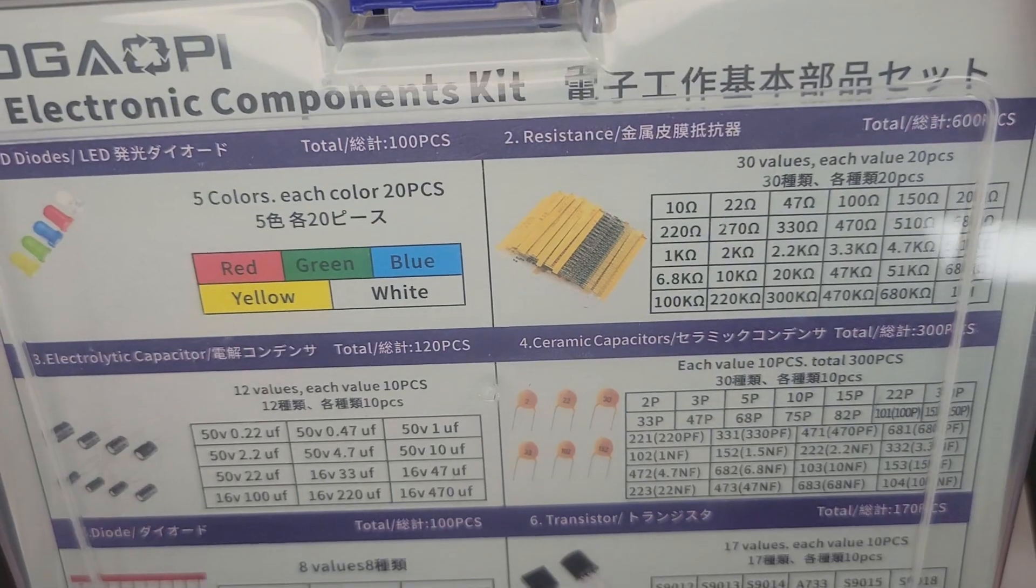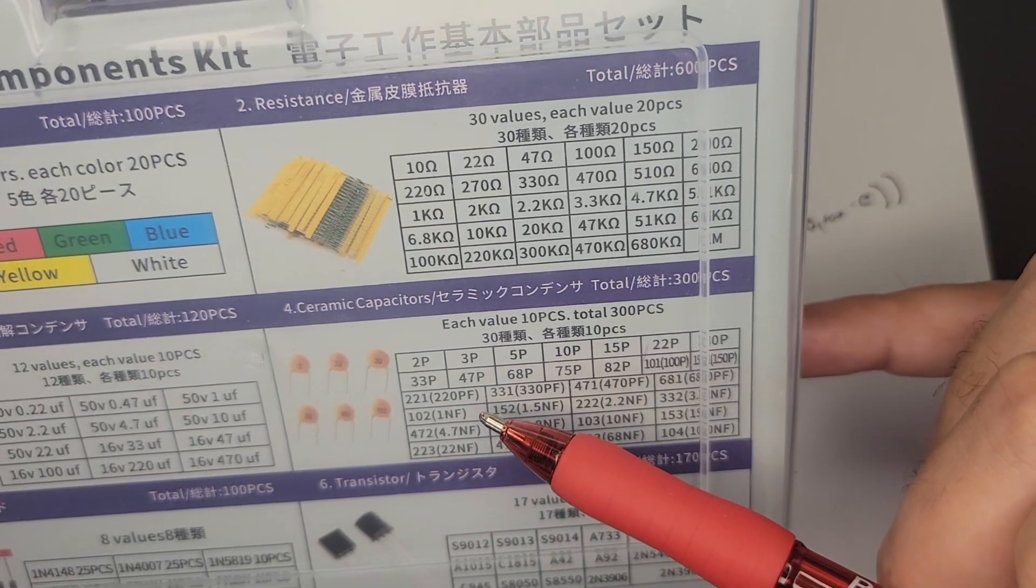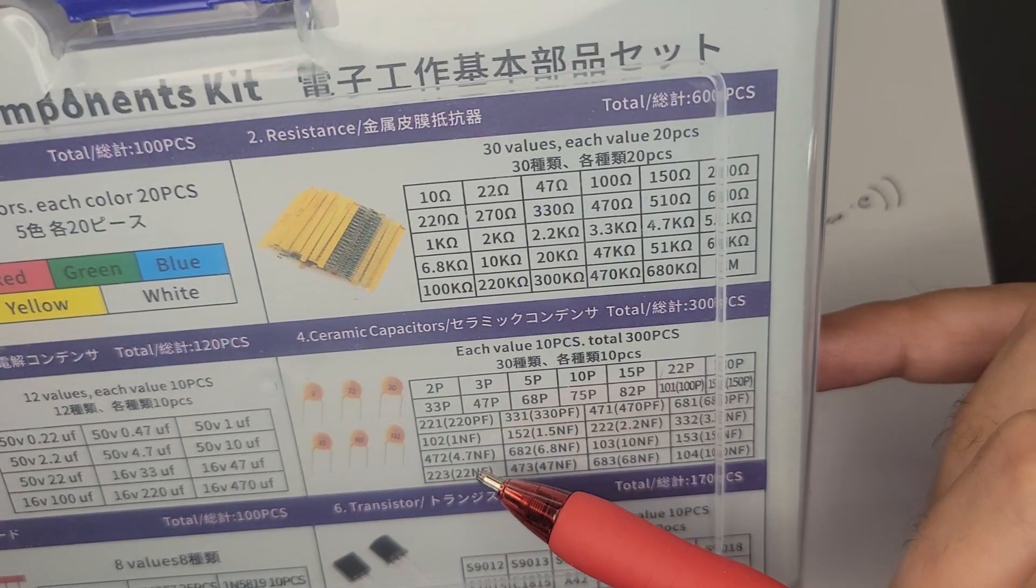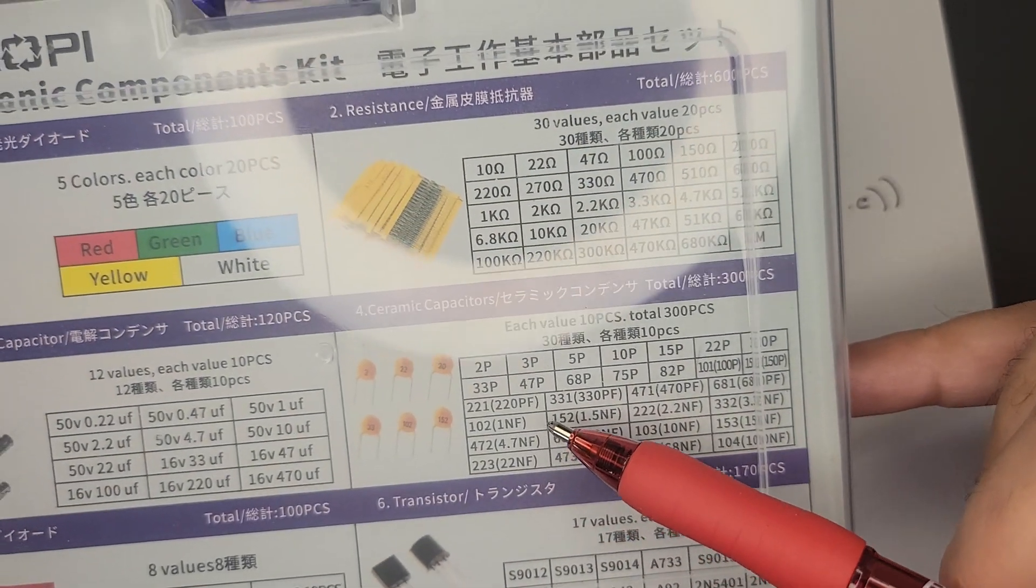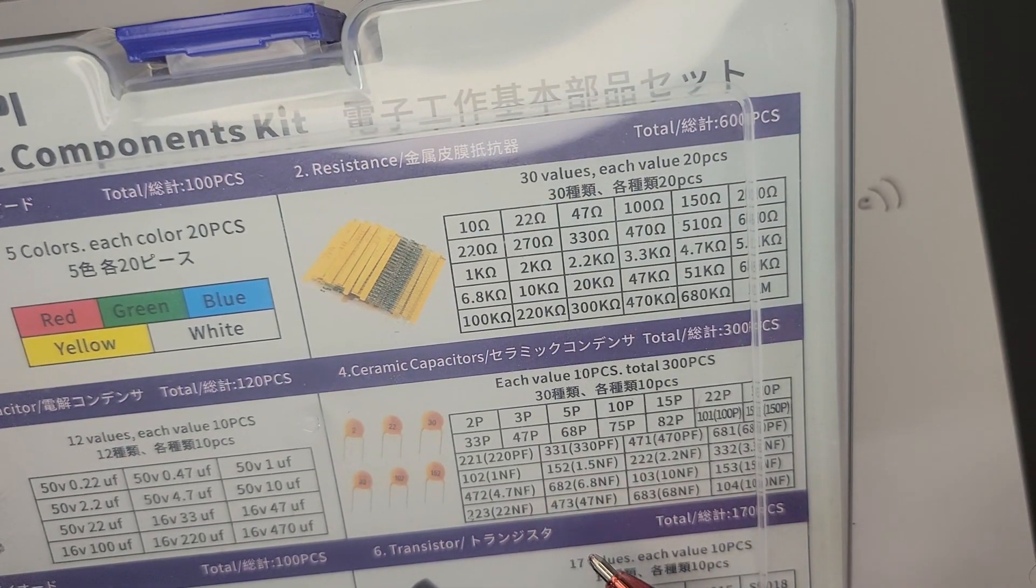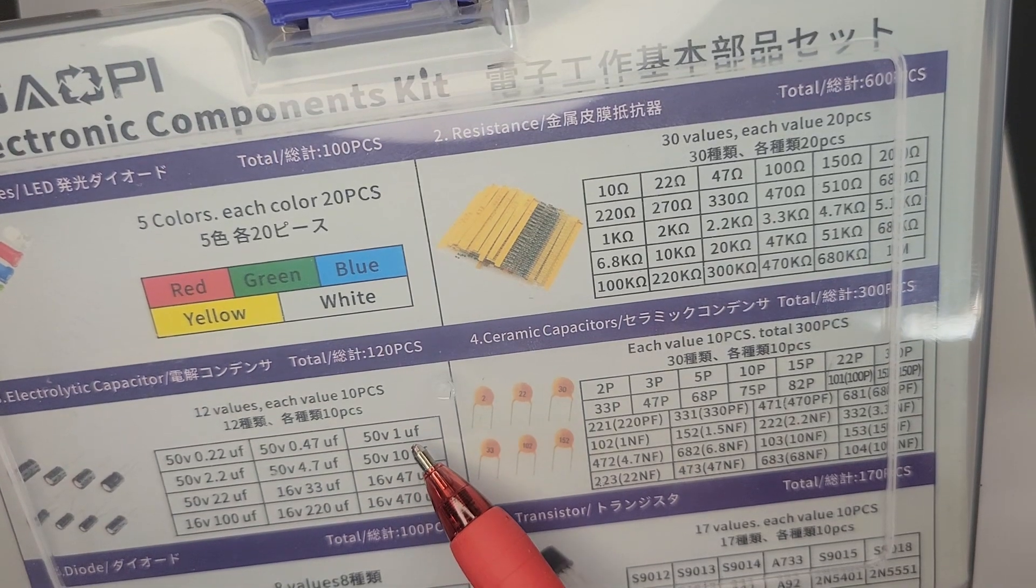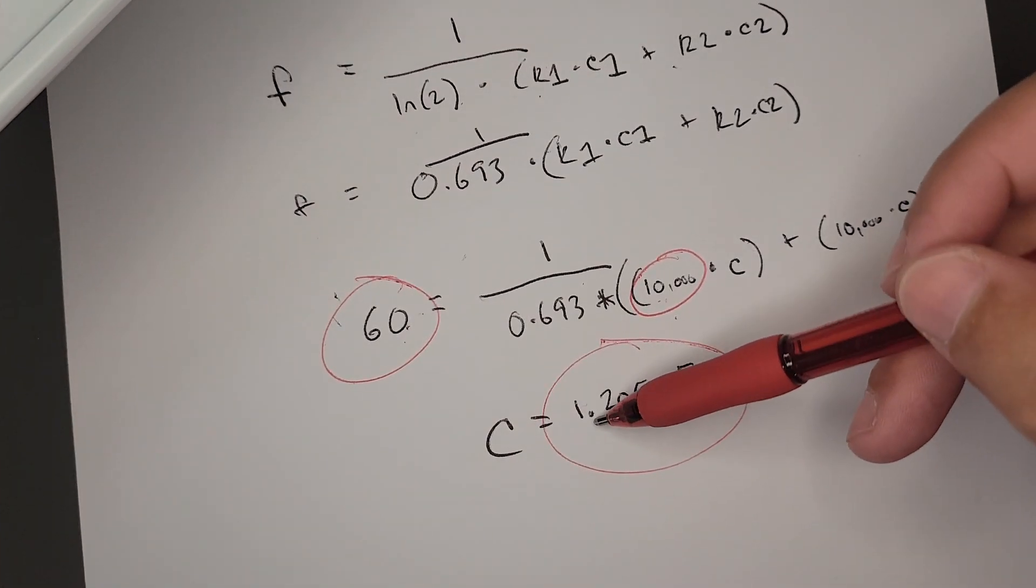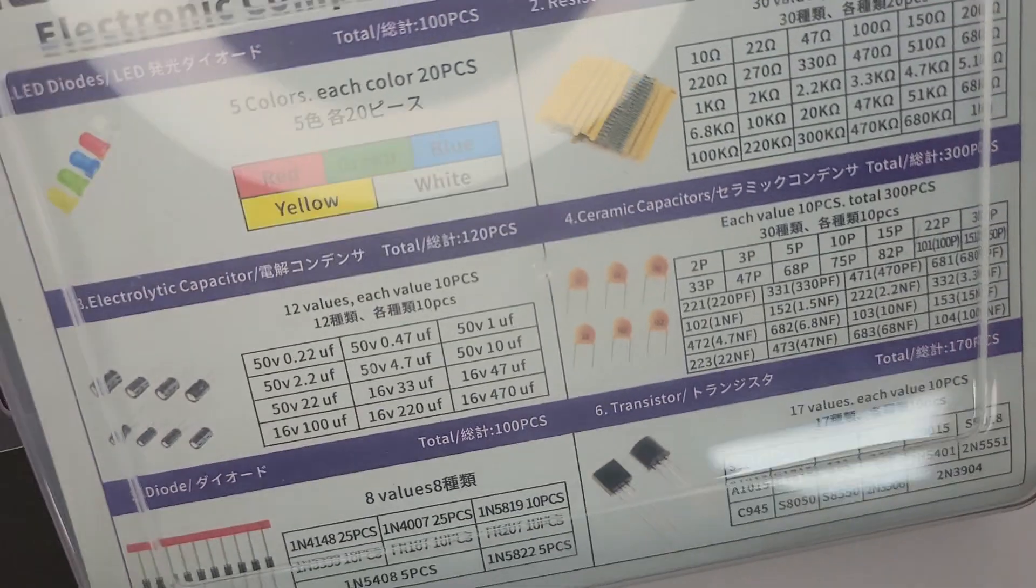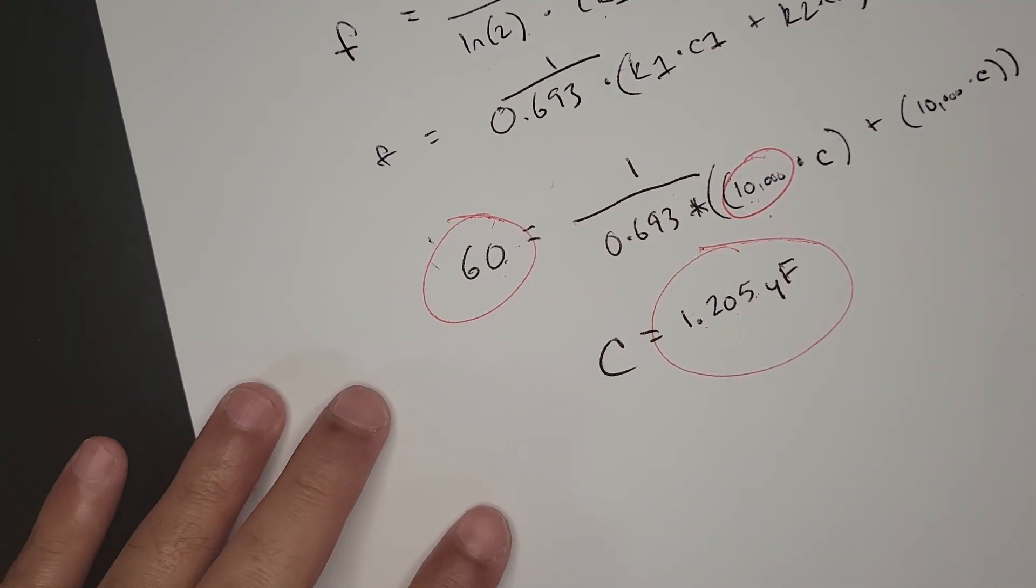This is a kit I got when I first started. We have some really low ones in picofarads. We have 4.7 nanofarads, 100 nanofarads. Right here we have one microfarad. That's super close, so that's what we want. We need 1.205 microfarads and we have one microfarad.